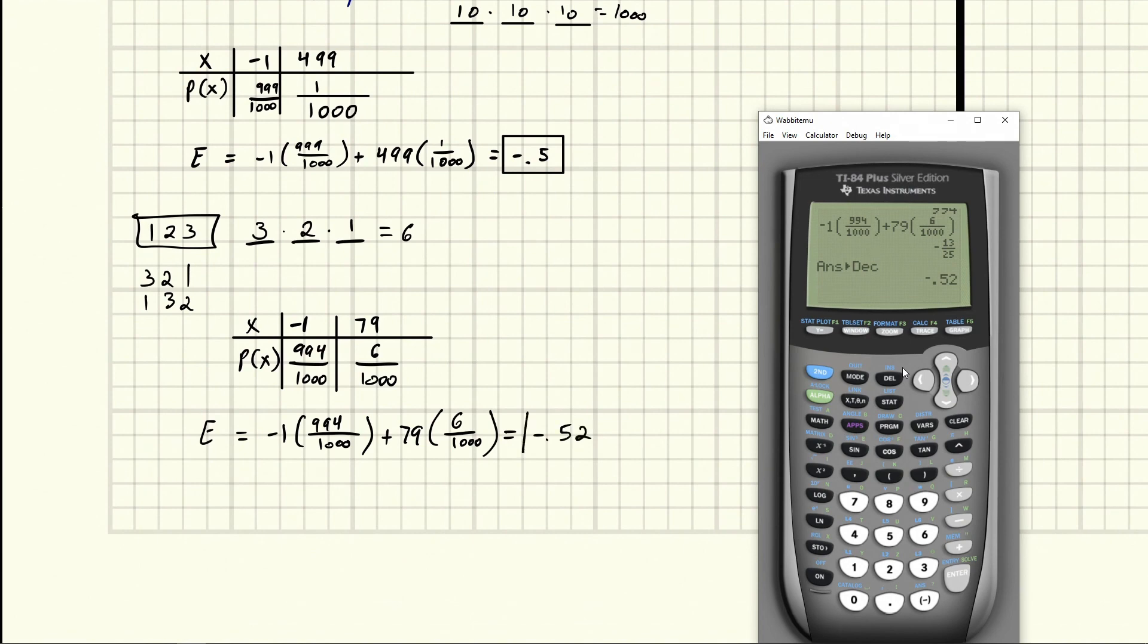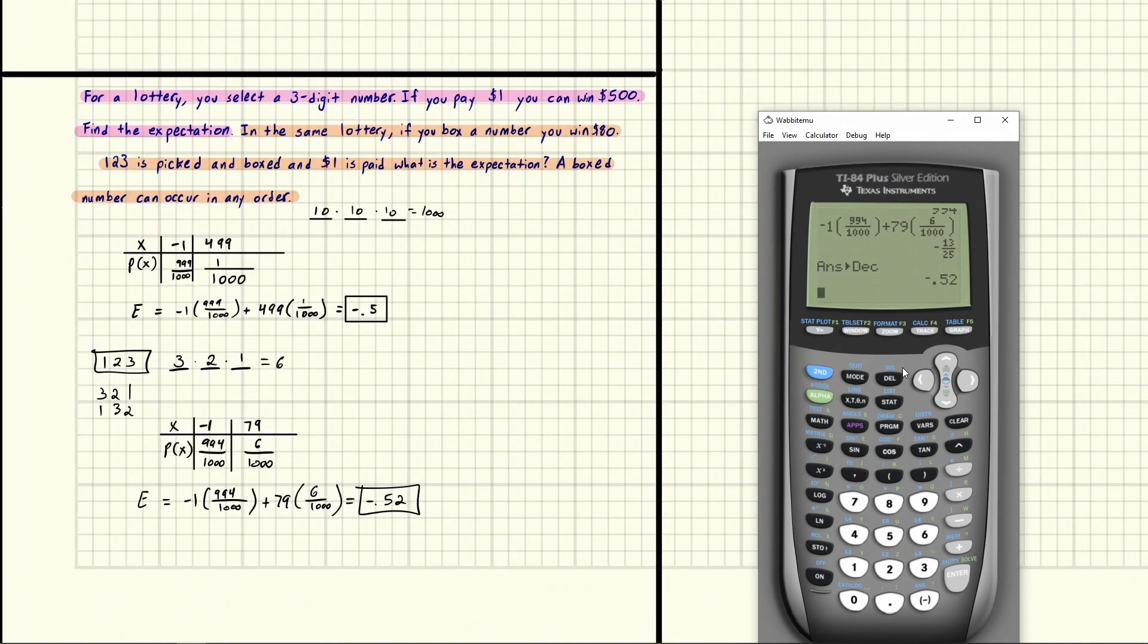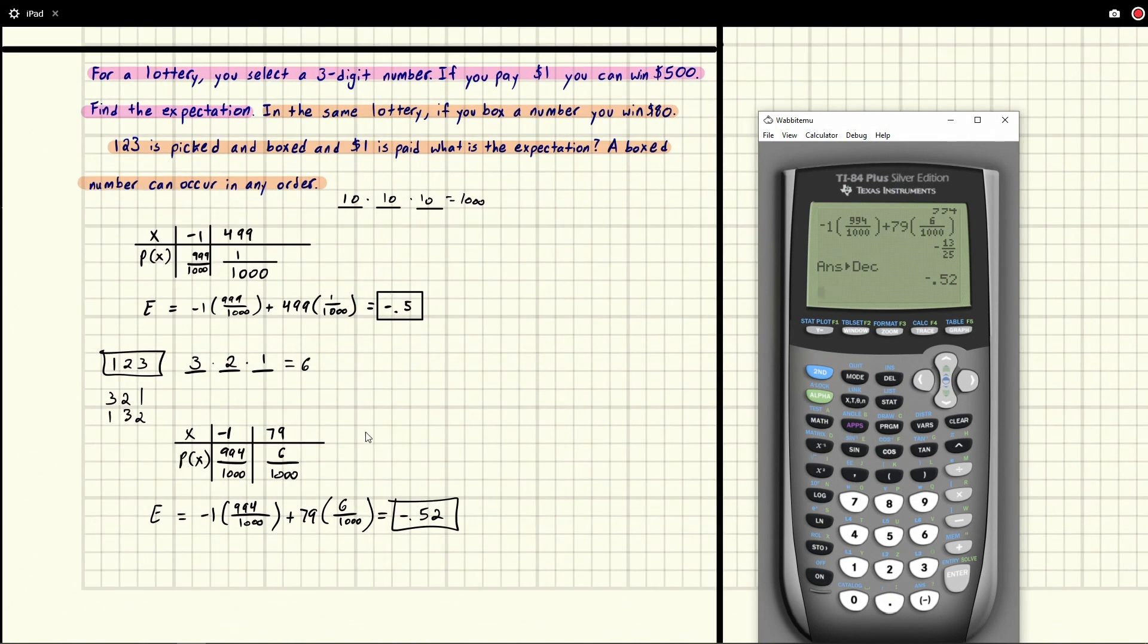So this one is actually a worse deal. It looks better, because you're like, oh look, there's more ways to win, but actually a worse expected value than the previous one. So that's how you do this question. If you have any questions about this, feel free to let me know, subscribe and hit that bell icon for future videos. And we'll catch you in the next problem.